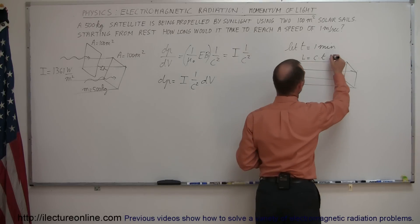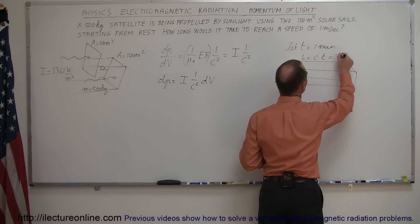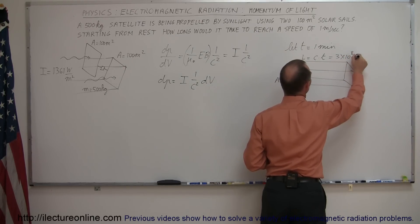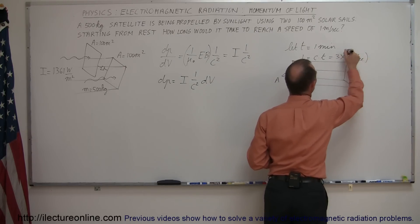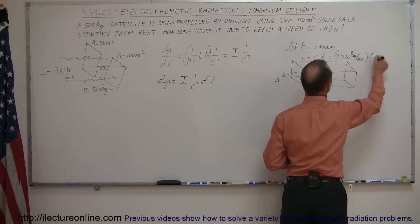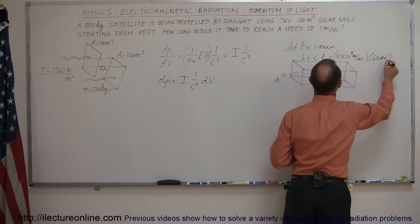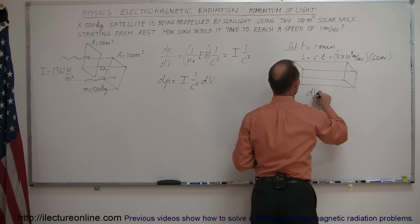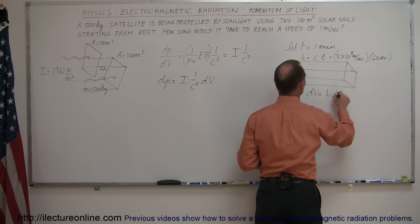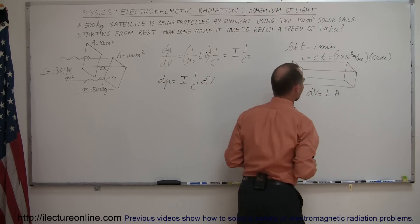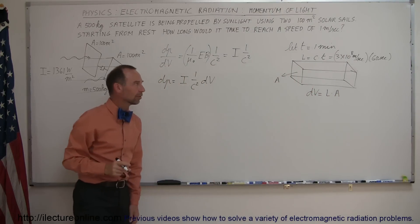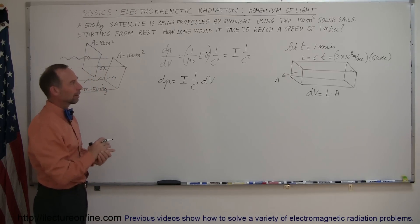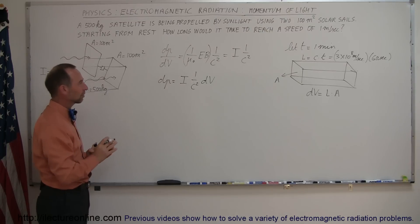The length would be the speed of light — 3 times 10 to the 8 meters per second — times a time of one minute, which is 60 seconds. So dV equals the length times the cross-sectional area, where the length is c times the time, giving us the volume of sunlight for the dp calculation.